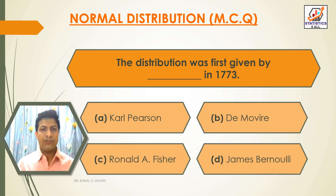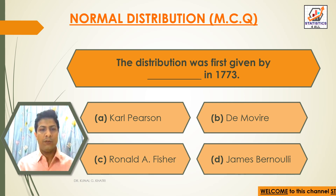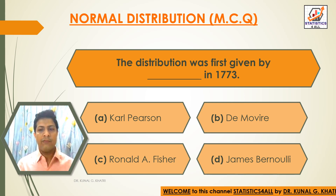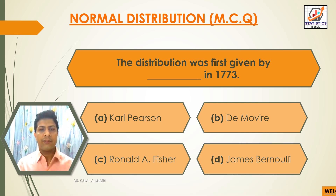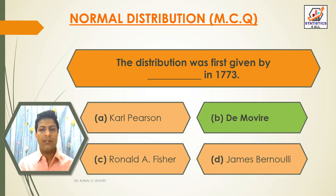First question: the distribution was first given by dash in 1773. Option A: Carl Pearson. Option B: De Moivre. Option C: Ronald A. Fisher. Option D: James Bernoulli. The answer is Option B — De Moivre. The distribution was first given by De Moivre in 1773.